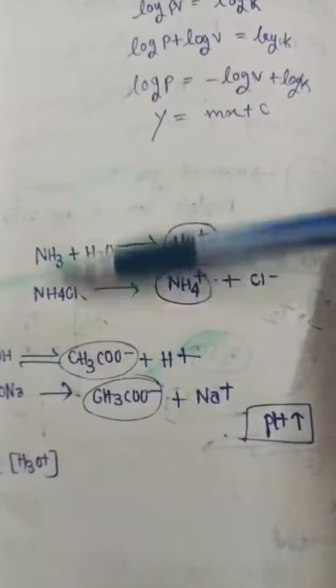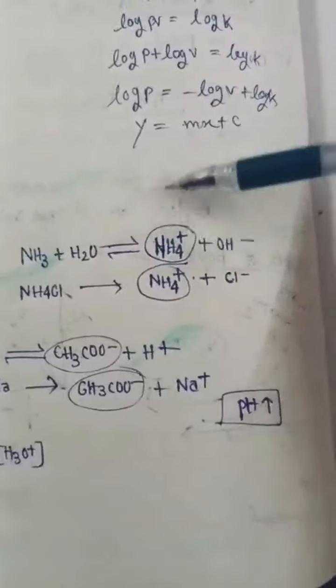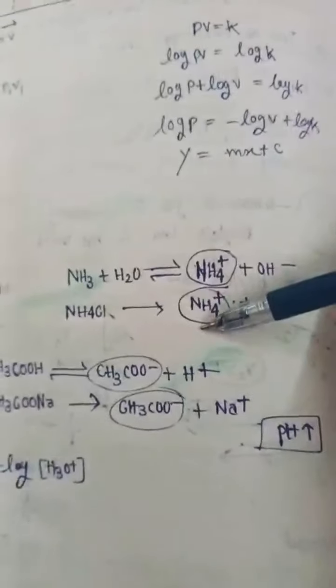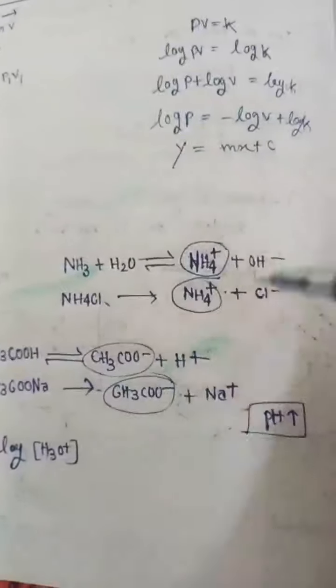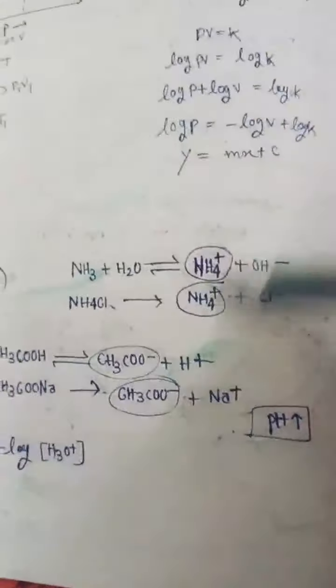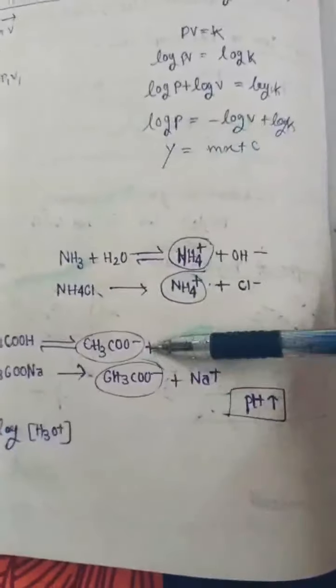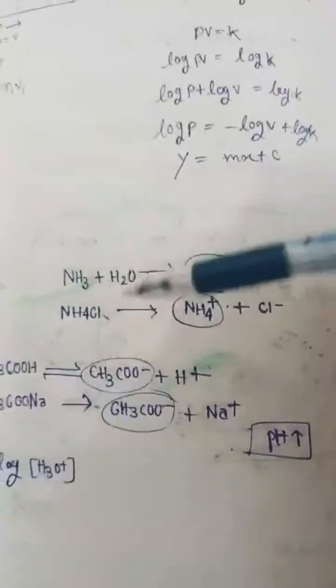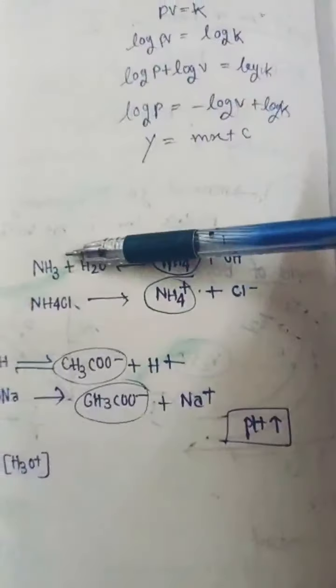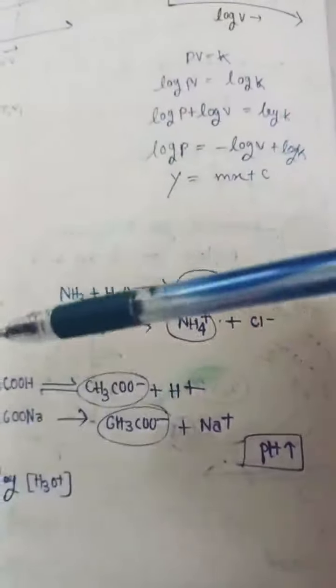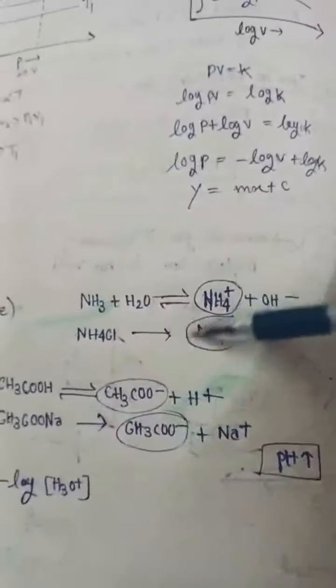Now if we take another example — যেখানে ammonia একটা weak base consider করে একটা solution নিয়ে যদি আমরা জানি, ammonium ion তৈরি হবে। যদি NH4Cl dissolve করা হয় তাহলে একইভাবে NH4+ ion তৈরি হবে, ammonium ion যেখানে common ion রূপে কাজ করবে। এবং তখন NH3 এর dissociation common ion effect এর জন্য কমবে — alpha কমে যাবে এই common ion গুলোর involvement এর জন্য।